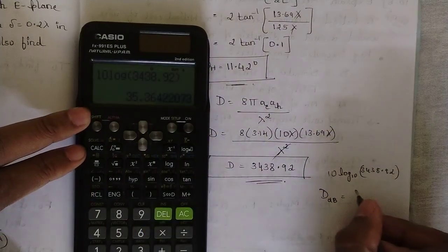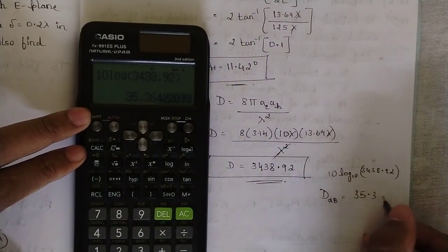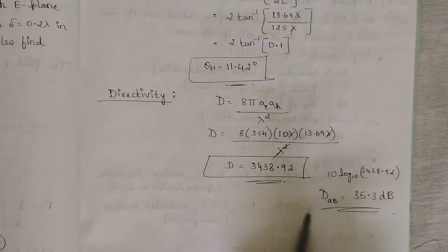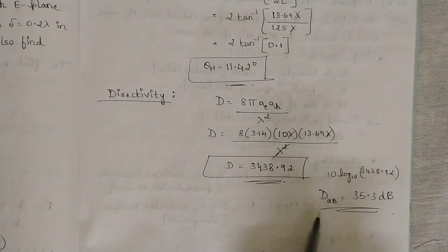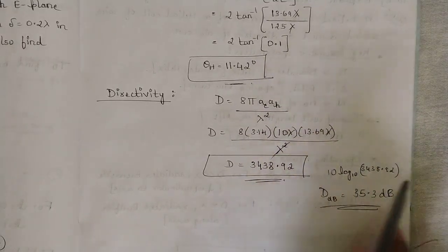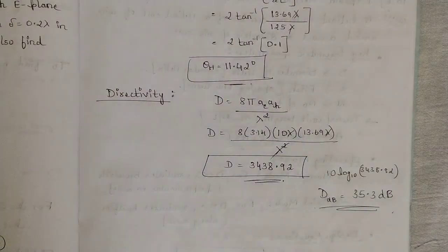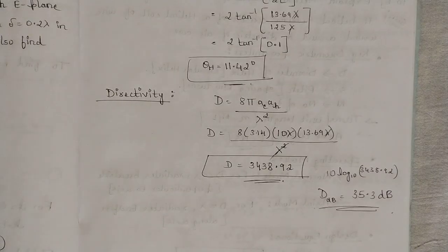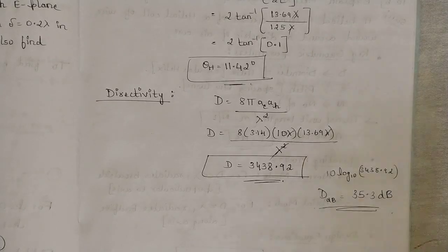Whenever directivity is required in dB, use the formula 10·log₁₀(D). That's all for this video — we have seen two important problems. In the next video we will see more problems. Till then stay tuned and watch all of our previous videos. Thank you.